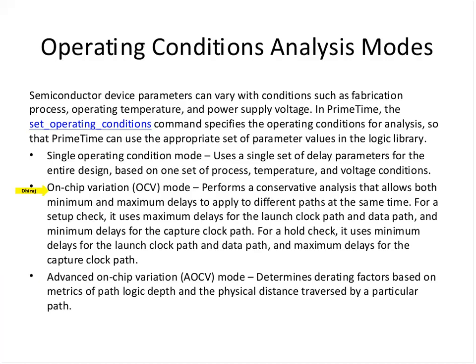The effect of device variation is captured in On-Chip Variation (OCV) mode. This is a conservative analysis which allows both maximum and minimum delays to apply to different parts of the design at the same time — this statement is very important. One thing common to both single and OCV modes is that we are using a single library. By selecting OCV mode, we enable something that makes the actual on-chip variation analysis possible.